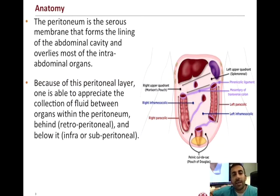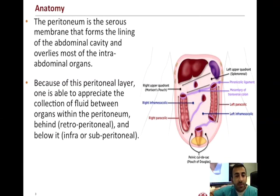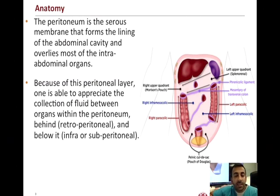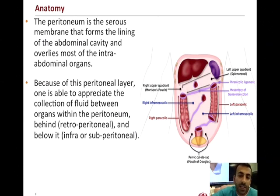Fundamental to the FAST exam is a basic review of anatomy. The peritoneum is a serous membrane that forms the lining of the abdominal cavity and overlies most of the intra-abdominal organs. Because of this peritoneal layer and the separation between retroperitoneal and intraperitoneal structures, the human body has pericolic gutters — pathways in which free fluid collects in certain dependent areas. Because of these pericolic gutters, when you have an injury above the umbilicus of greater than 200 mLs, you will have free fluid collection at the right upper quadrant.